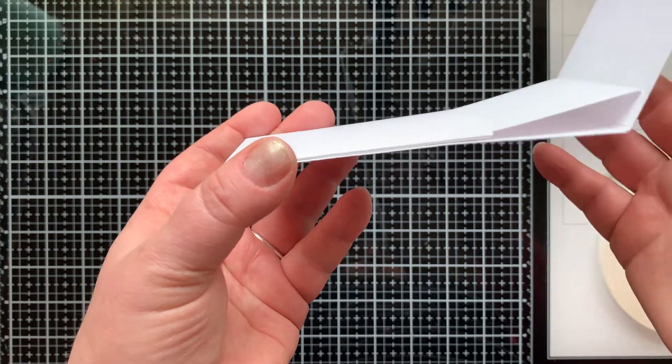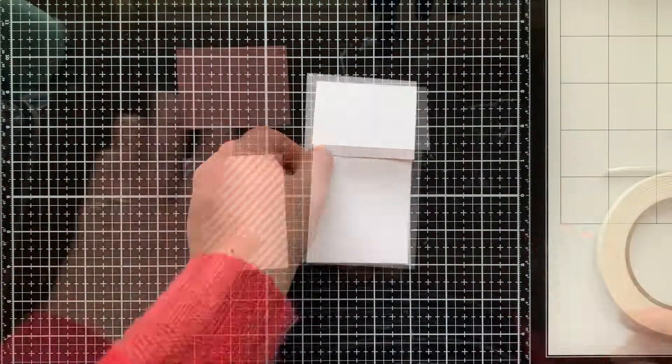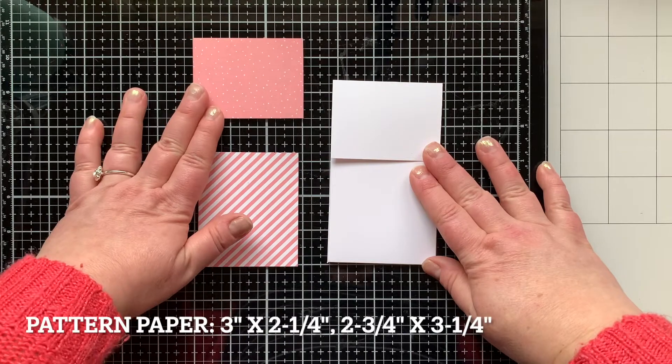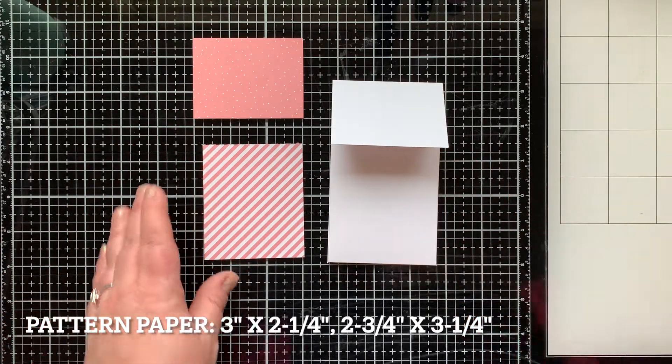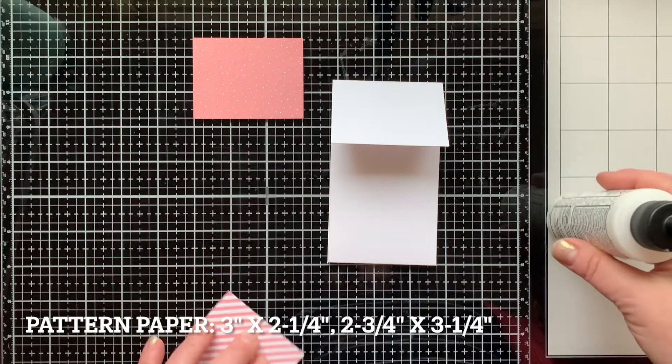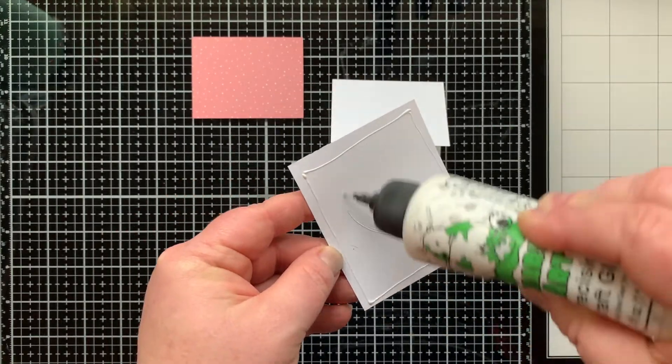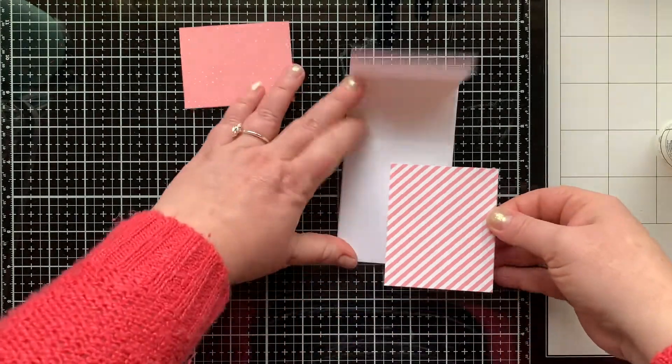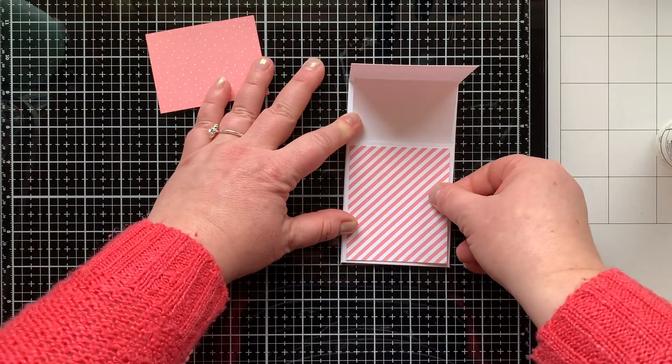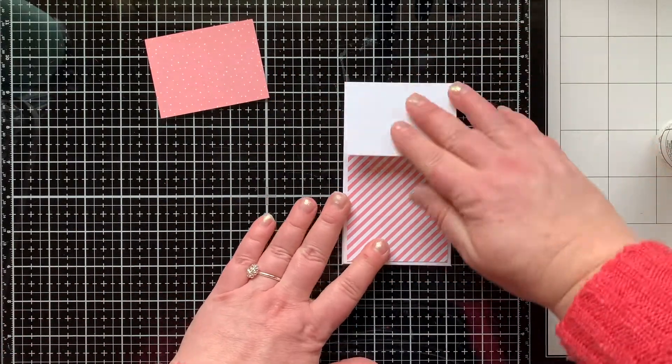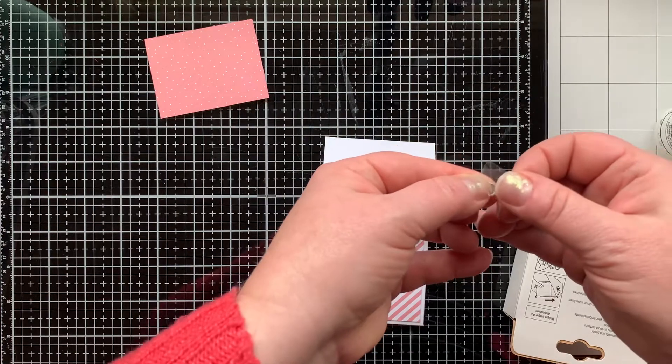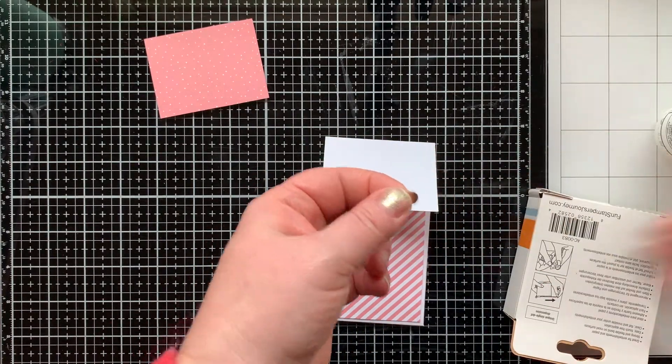All right, so now it's time to make it cute. I have some patterned paper here—you can see the measurements on the screen to fit this pocket—and it is from the Let It Shine pack, the original Let It Shine pack from Lawn Fawn. They redid it this year so it has snowflakes in it. Any pattern paper that you have would do here.